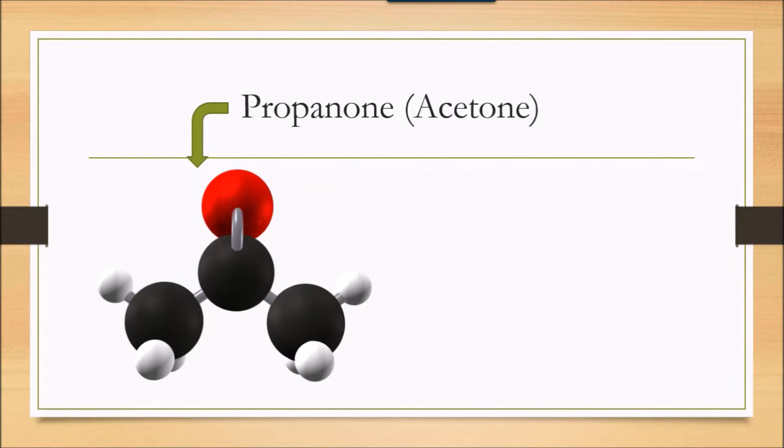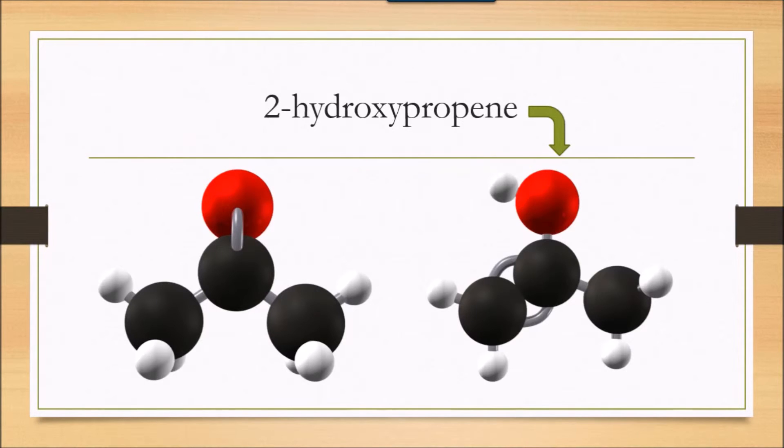Let's look at an example. Here I have a 3D picture of propanone, the simplest ketone you can possibly make. And this one is 2-hydroxypropene, an alkanol. It has an alcohol group next to a carbon-carbon double bond.